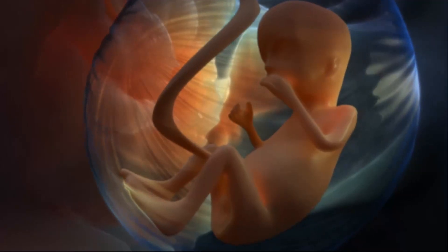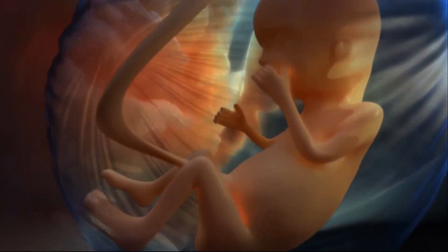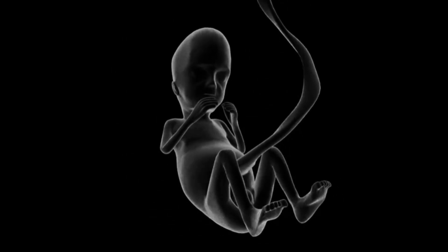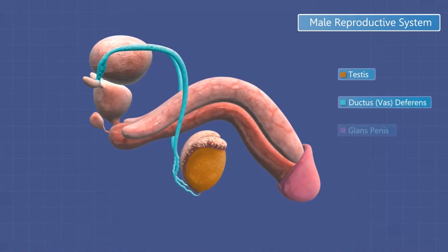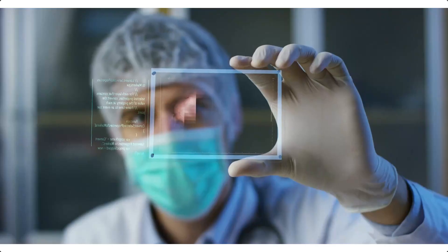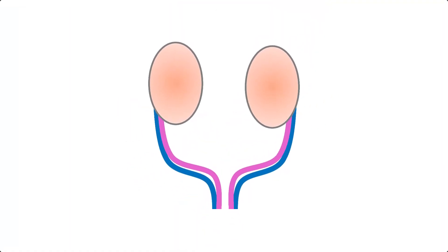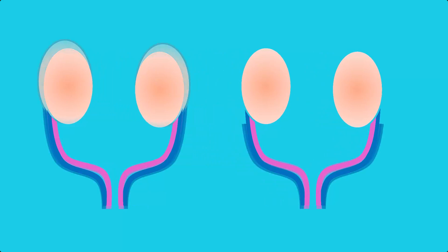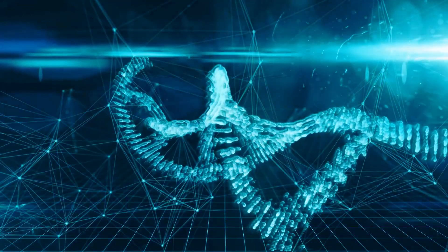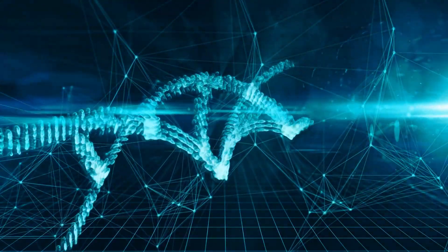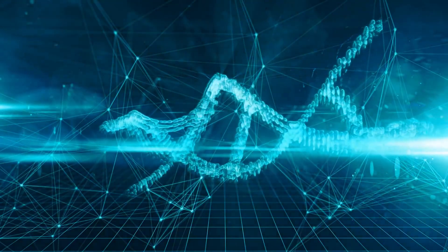At week 8, the external genitalia begin to form. This process is known as sexual differentiation, which refers to the development of the anatomical features of the reproductive tract. At the 8- and 9-week stage of development, the primitive reproductive tracts are in the form of a pair of ducts called the Mullerian duct and the Wolffian duct. As development proceeds, one of the pairs of ducts develops while the other regresses. It is the presence or absence of the sex-determining region of the Y chromosome that dictates which ducts develop.